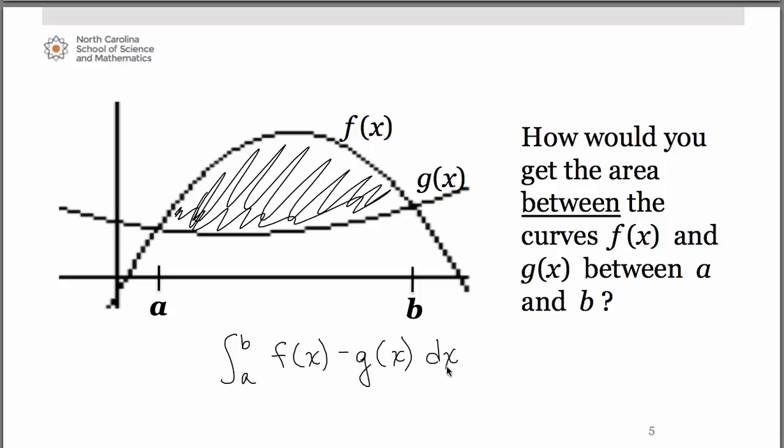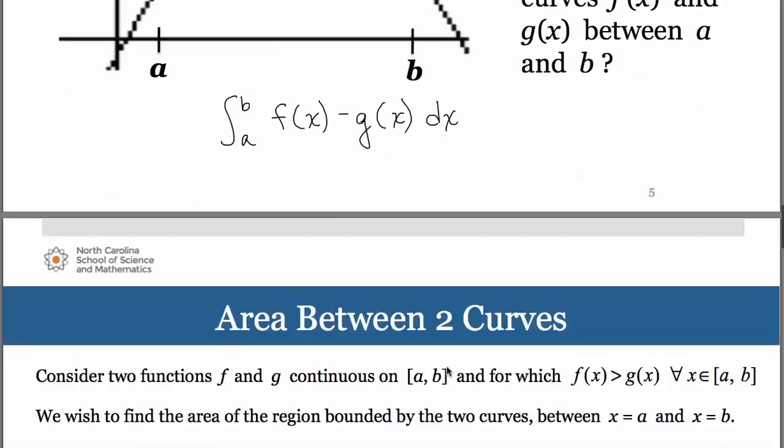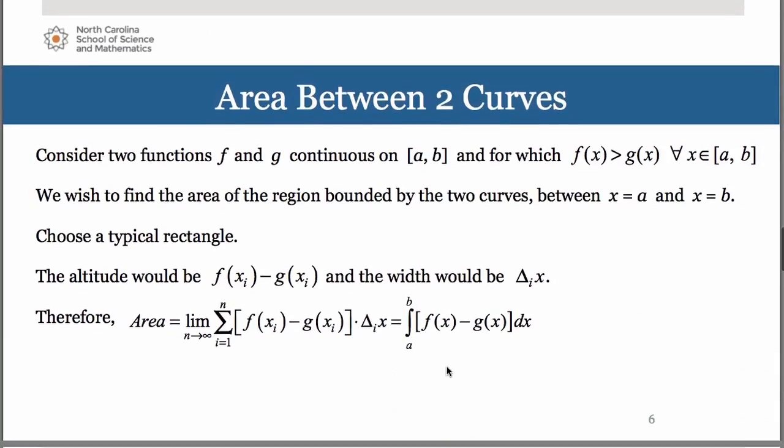So let's talk about the theory a little bit behind this. So if we have two functions, f and g, both of which are continuous on the closed interval from A to B, and we know that one of the functions sits higher than the other for all x's on that interval from A to B. And we wish to find the area that's bounded by those two curves in between the x values of A and B.